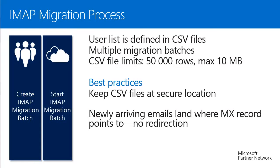In an IMAP migration, you can migrate users in groups — called batches — defined by CSV files. The CSV files contain the username, login name, and user password. Since passwords are stored in these CSV files, keep them in secure locations — for example, keep BitLocker switched on on your laptop. The CSV file limitations are: no more than 50,000 rows per file and no file larger than 10 megabytes. However, feel free to create multiple CSV files, so you can migrate hundreds of thousands of users without issue.